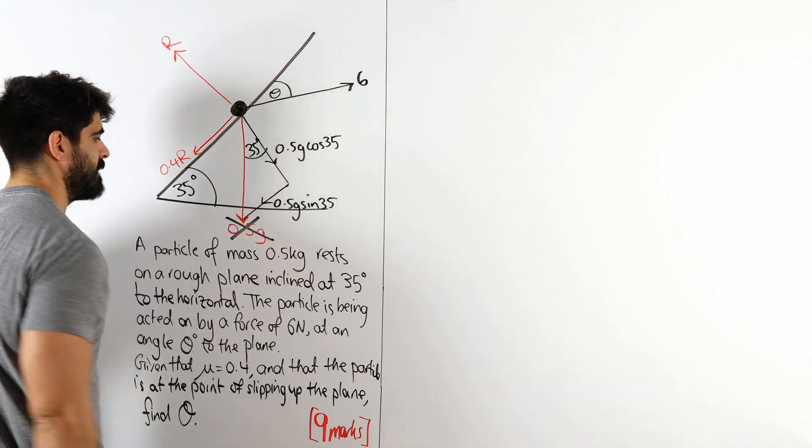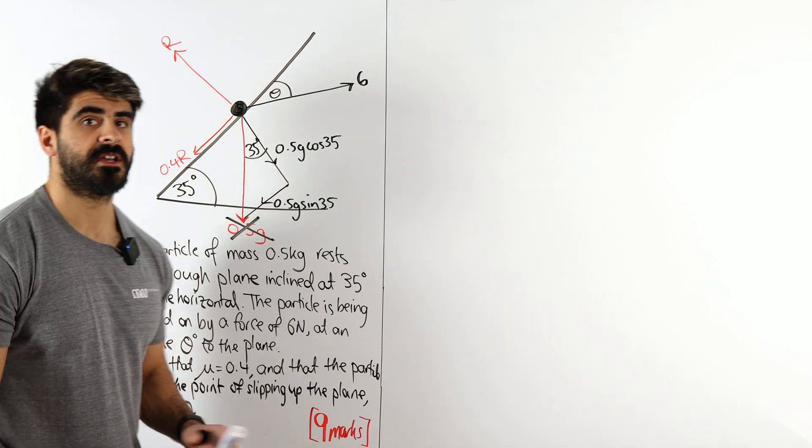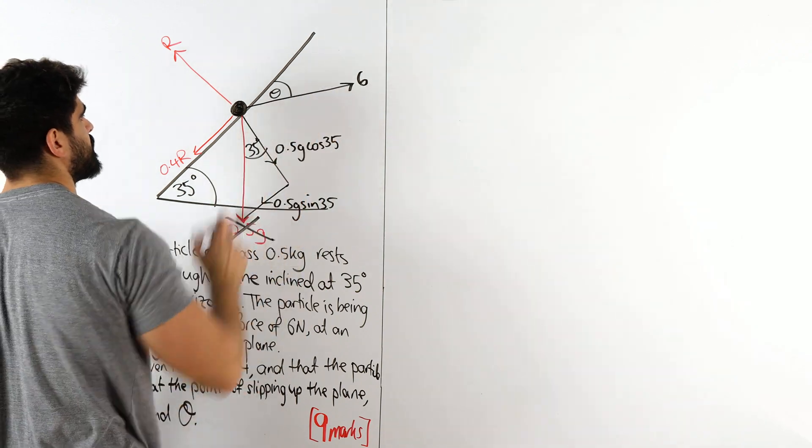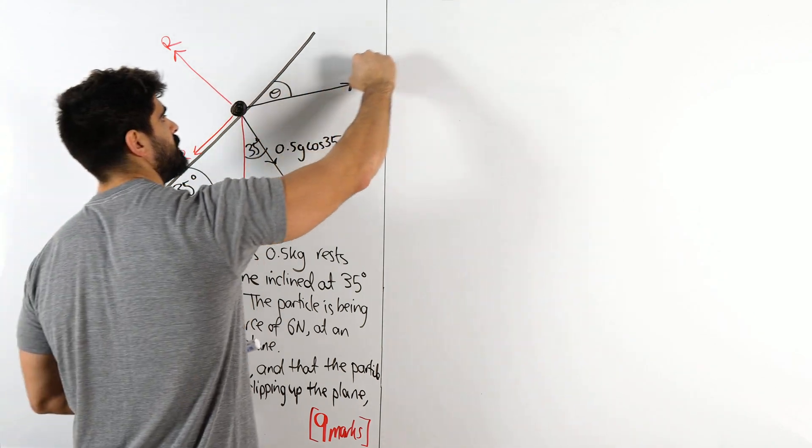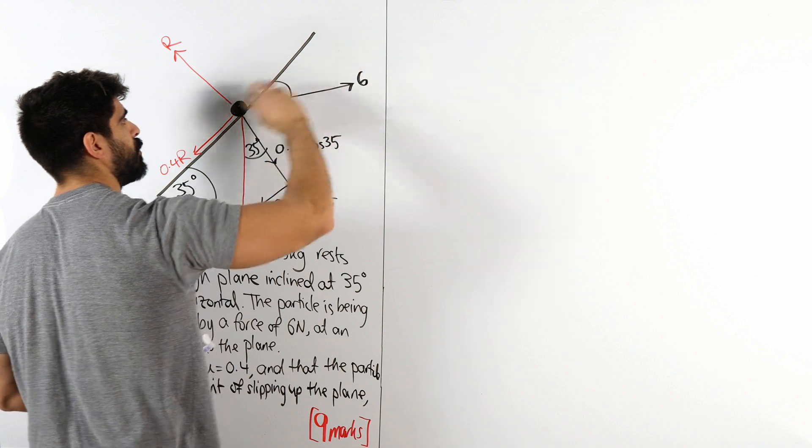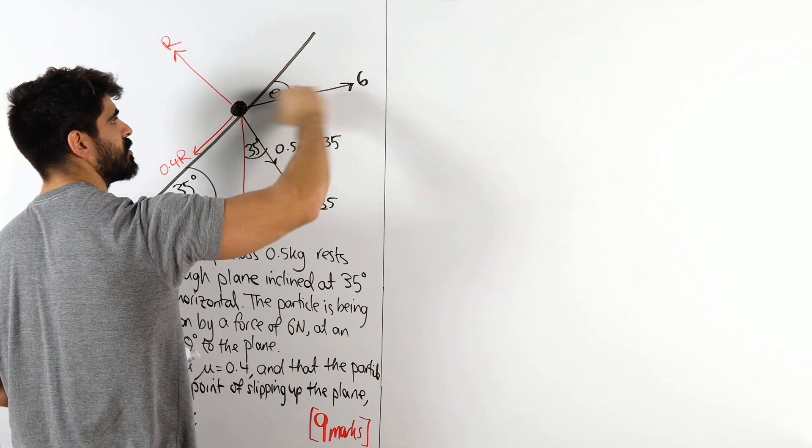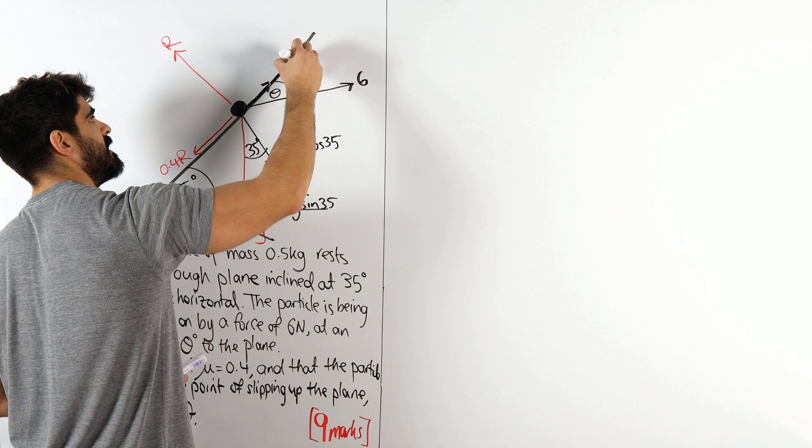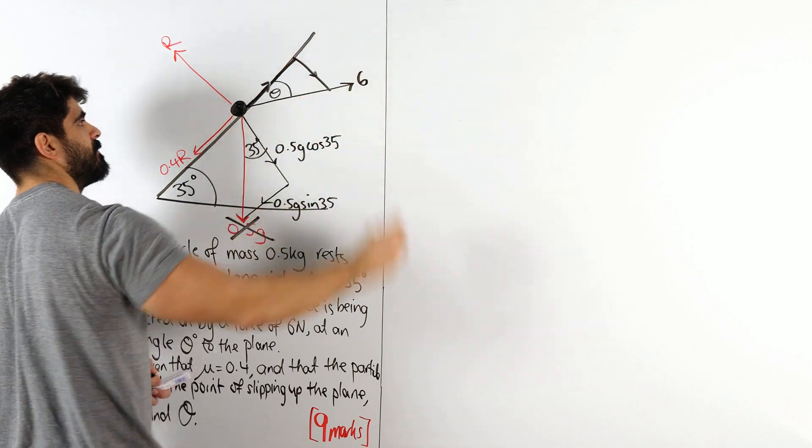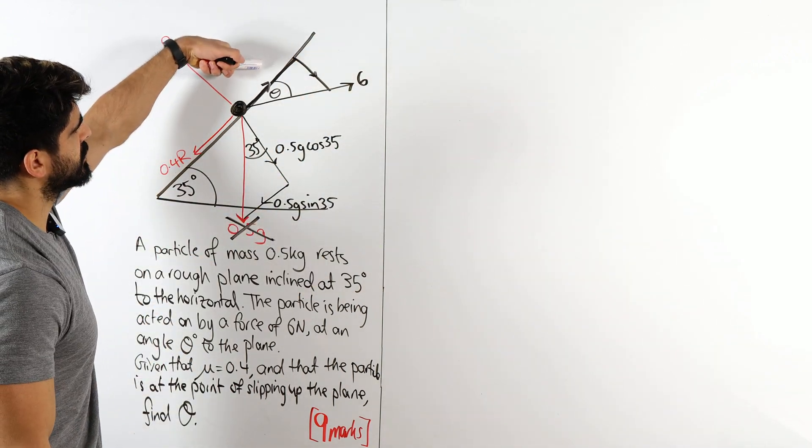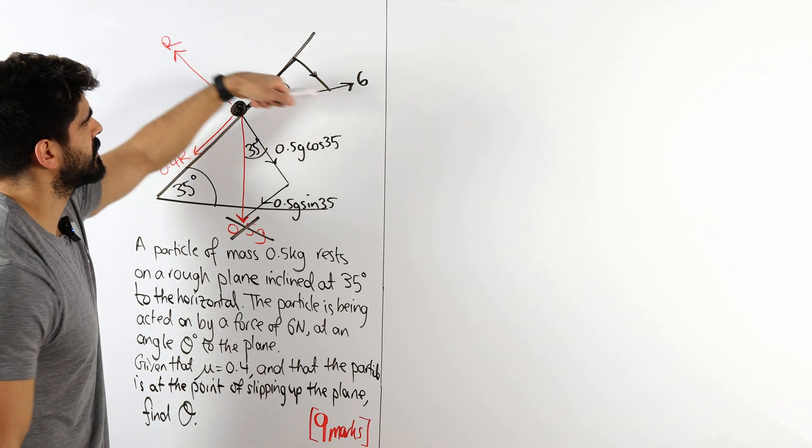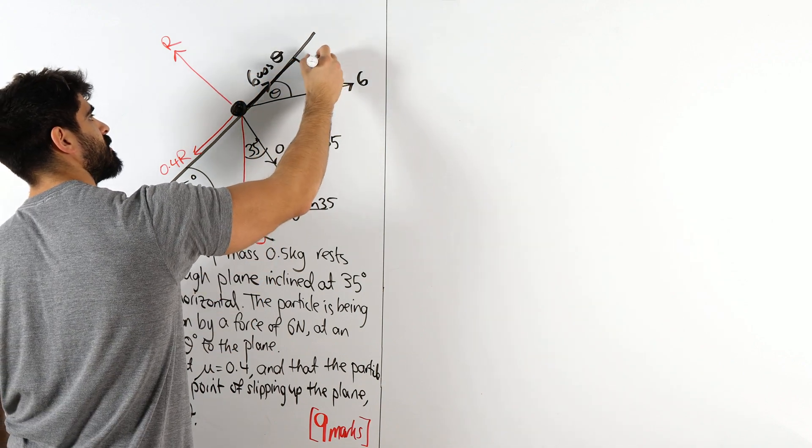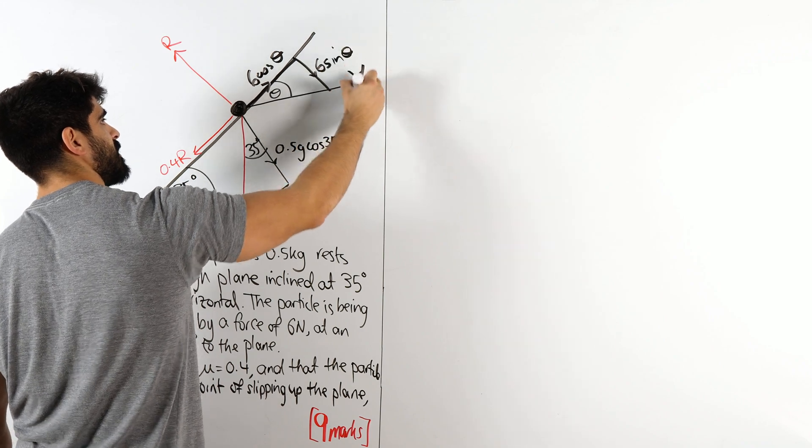Once you've used the force in your exam, cross it off because at the end, hopefully every single force has been ticked off. Let's do the same with the six. Now this six is pulling in this direction. So what is it trying to do? It's trying to pull the particle up the hill, but it's also pulling it into the ground. So the way we resolve this one is it's going to go up the plane into the ground. Now this is the adjacent side, it's going to be 6 cos theta. And this opposite is going to be 6 sin theta. Cross this off.